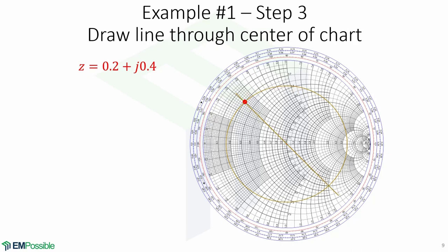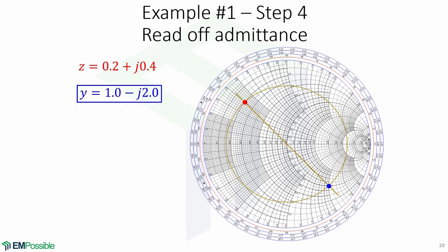Next, we draw a line that passes through the impedance point, through the center, and to the other side. Now we read off the admittance from the intersection of the VSWR circle and the line. Here we see that y = 1.0−j2.0.